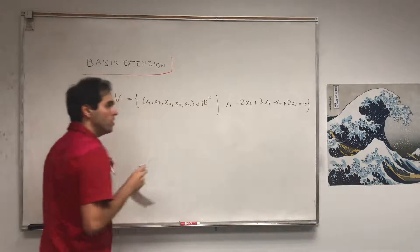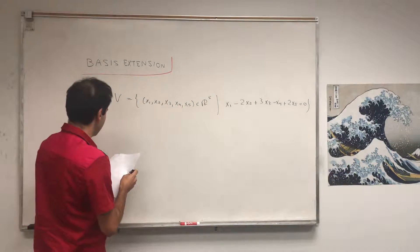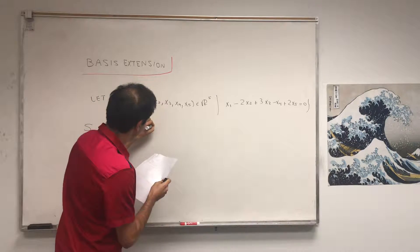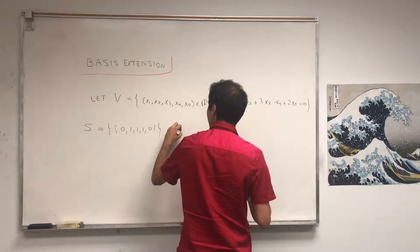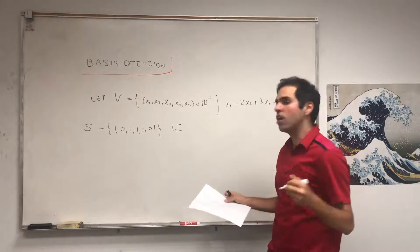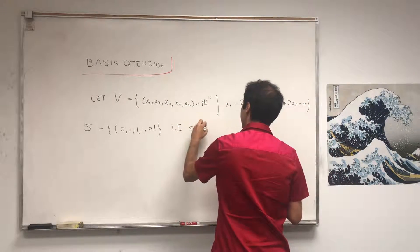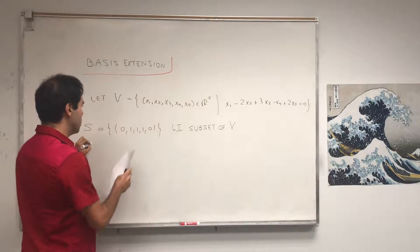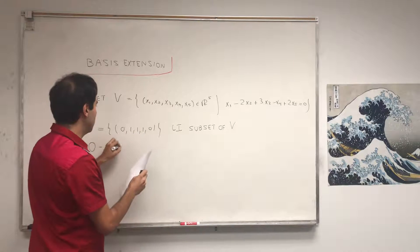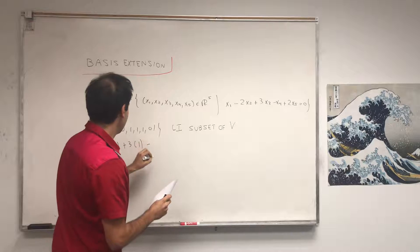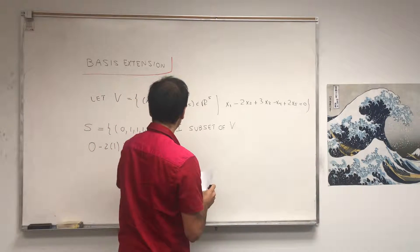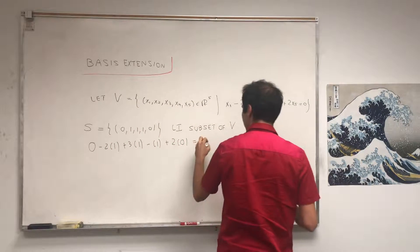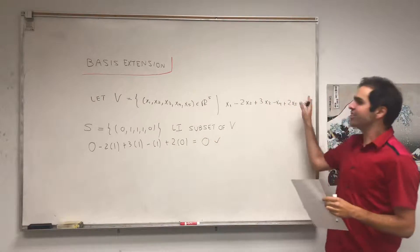Consider the following linearly independent subset: S is the vector (0, 1, 1, 1, 0). It's linearly independent because it only has one non-zero vector. You can check that it's in V: zero minus 2 times 1, plus 3 times 1, minus 1, plus 2 times zero equals minus 2 plus 3 minus 1, which is zero. So indeed, that vector is in V.